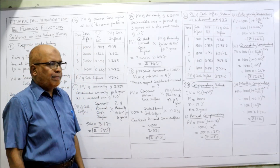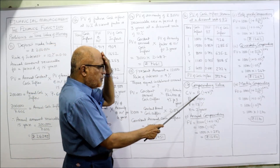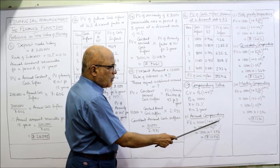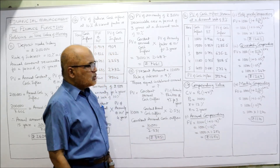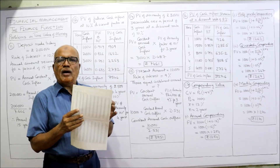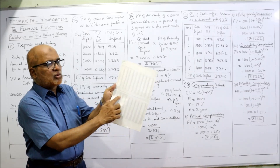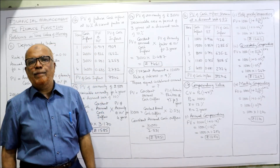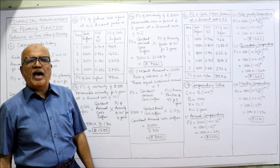For annual compounding, substitute P₀ = 1,000, R = 12% (0.12), N = 2 years. So 1,000 × (1.12)² = 1,000 × 1.264 = 1,264. The value 1.264 is from the compound value table at 12% for 2 years. So the compound value after 2 years with annual compounding is 1,254.